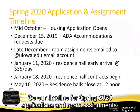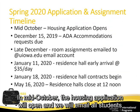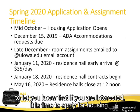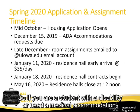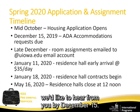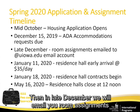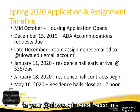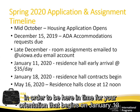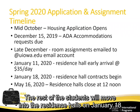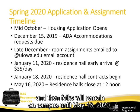Our timeline for Spring 2020 applications and room assignments: in mid-October the housing application will open and we will email all admitted students. By December 15th we ask that you let us know if you need an ADA — Americans with Disabilities Act — accommodation. In late December we will email room assignments to your uiowa.edu email account. January 11th is an early arrival day for orientation beginning January 13th. The rest of students move in January 18th and remain on campus until May 16th, 2020.